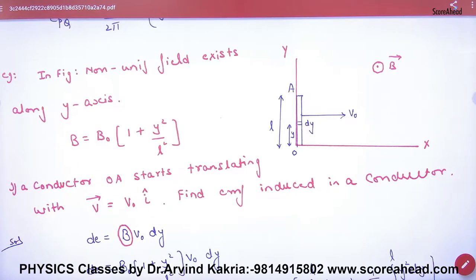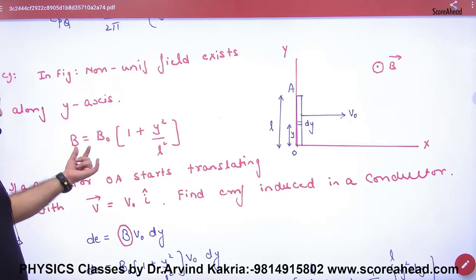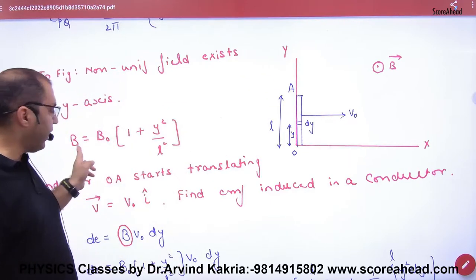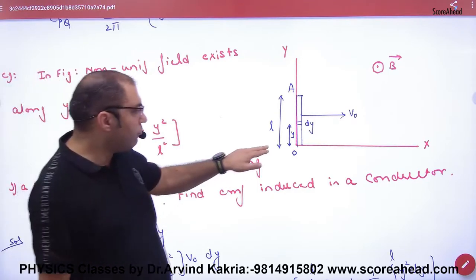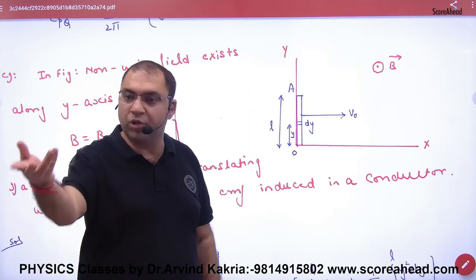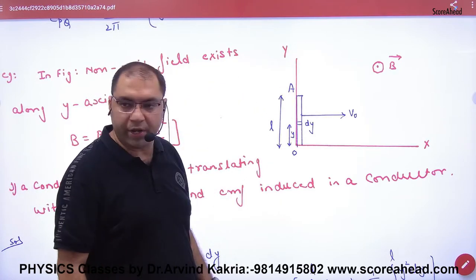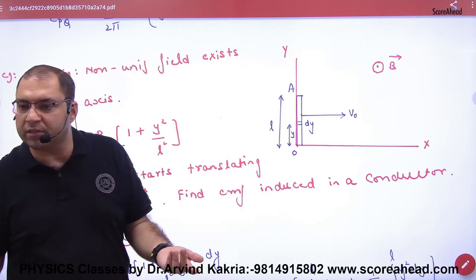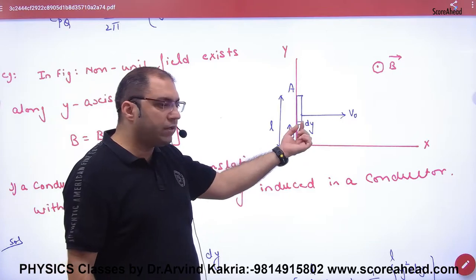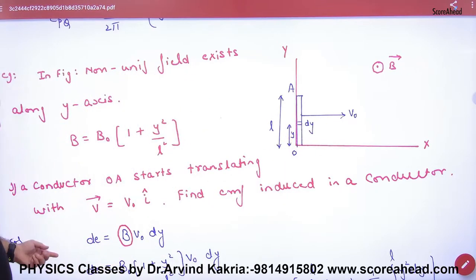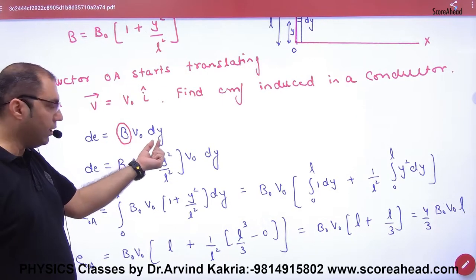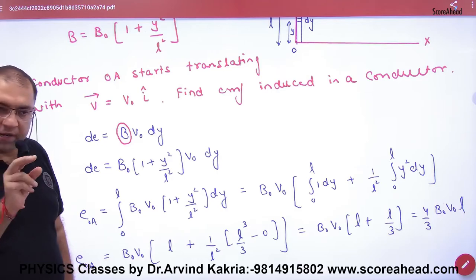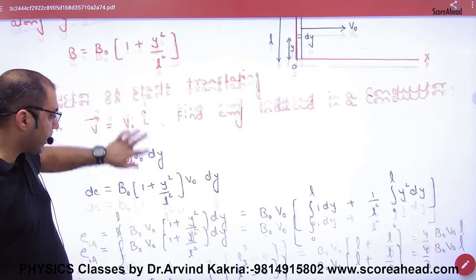See, this is the same problem given. B value change with y. Now B, y changes here. Here y has different different values. So y = 0, B increases here. Here non-uniform field, B changes and rod moves. What you do? Motional EMF, but B changes. So B dℓ V. dEMF = B dy V, y dy.